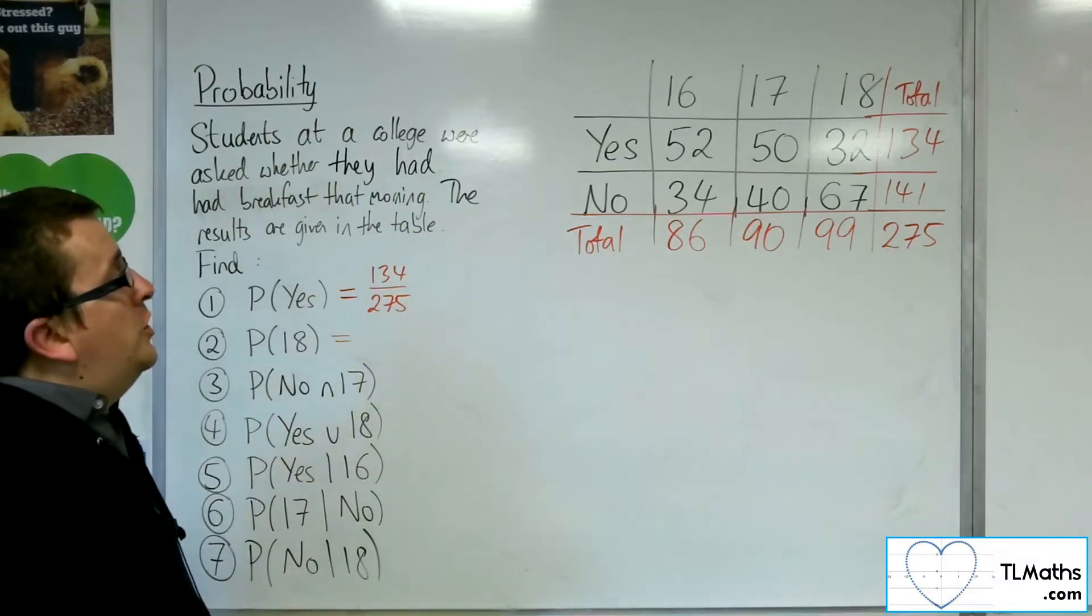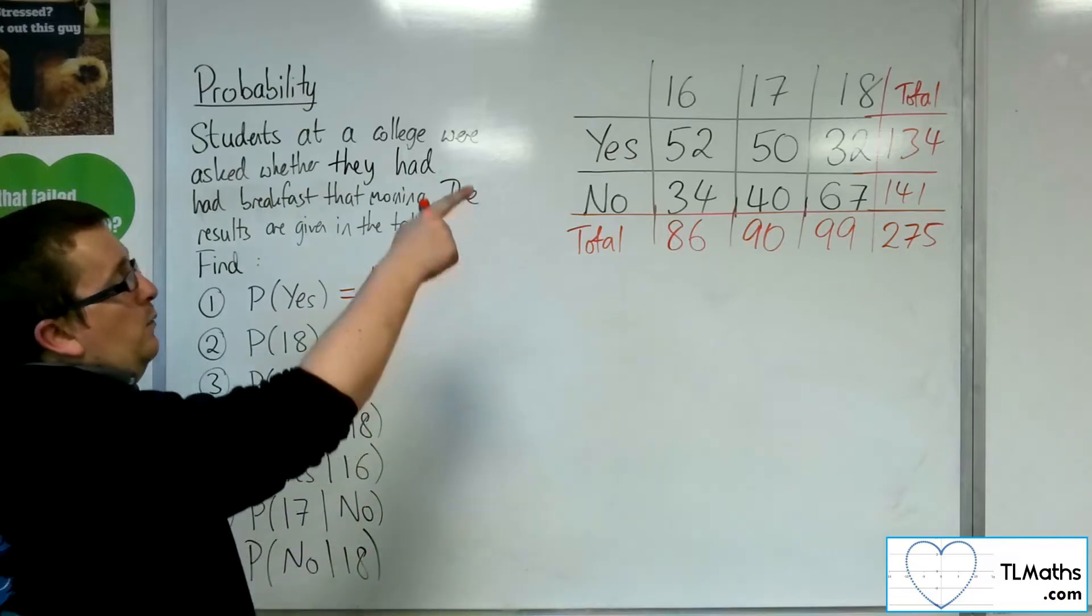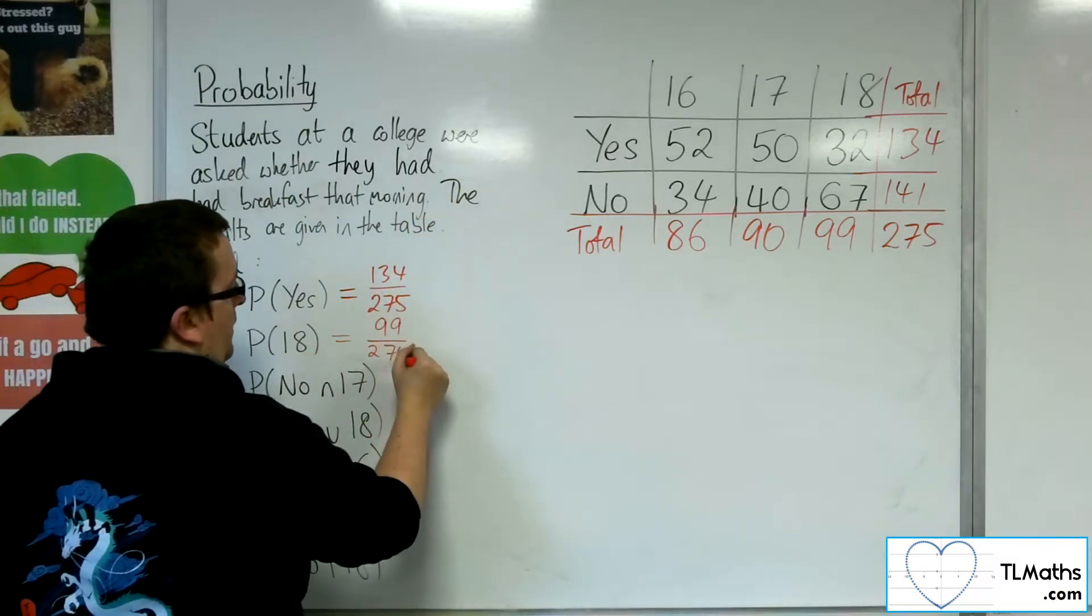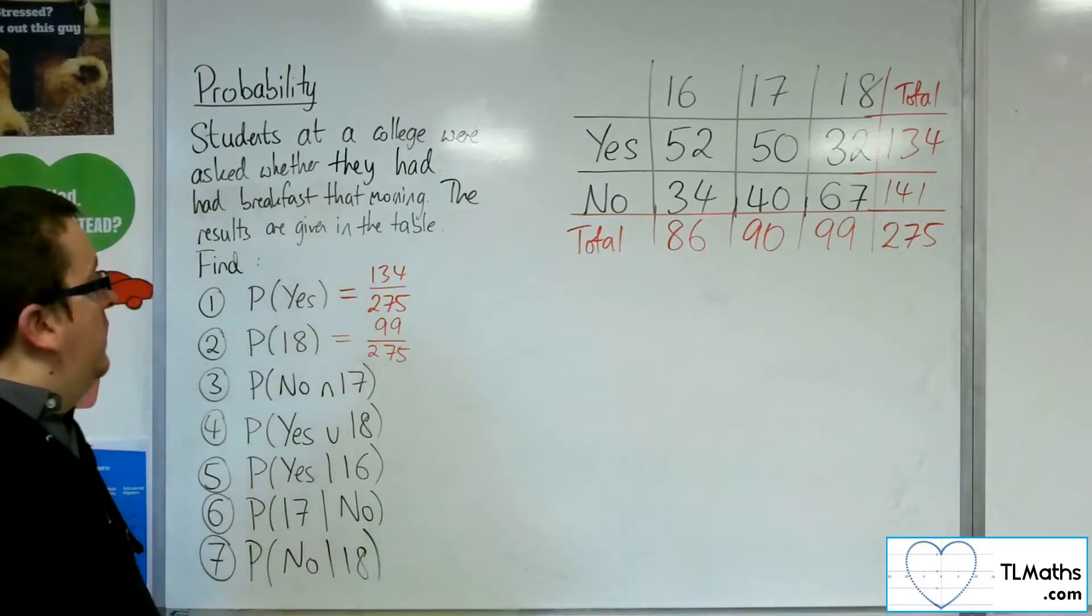The probability of choosing a student who was 18, there were 99 students that were 18 out of the 275. And so that's the probability that I'm looking for.